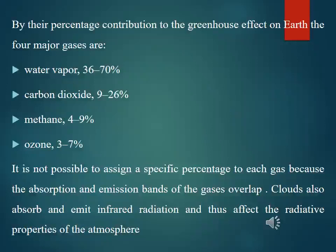By their percentage contribution to the greenhouse effect on Earth, the four major gases are: water vapour, 36 to 70%; carbon dioxide, 9 to 26%; methane, 4 to 9%; and ozone, 3 to 7%. It is not possible to assign a specific percentage to each gas because the absorption and emission bands of the gases overlap. Clouds also absorb and emit infrared radiation and thus affect the radiative properties of the atmosphere.